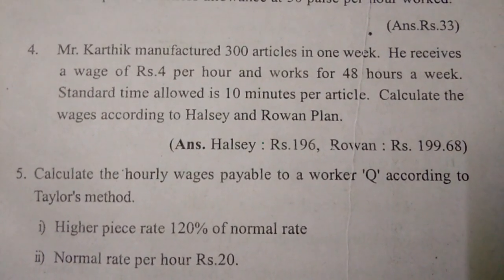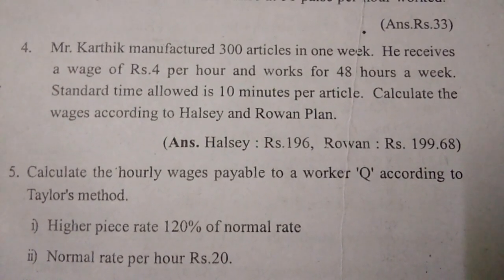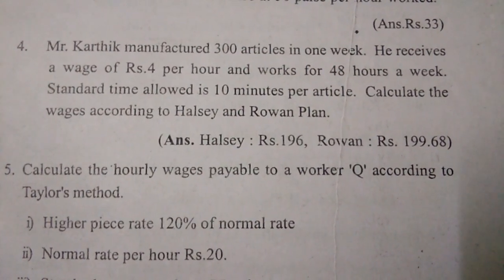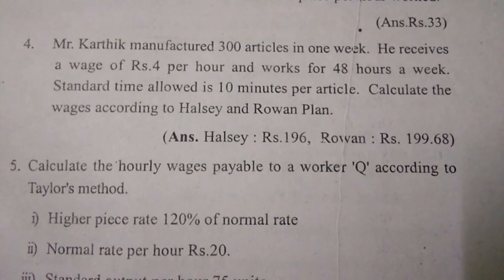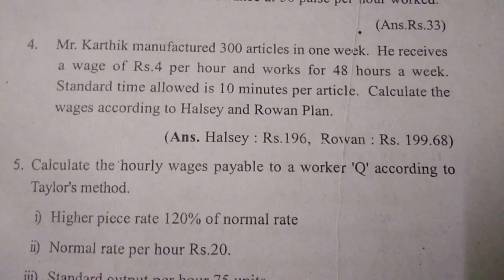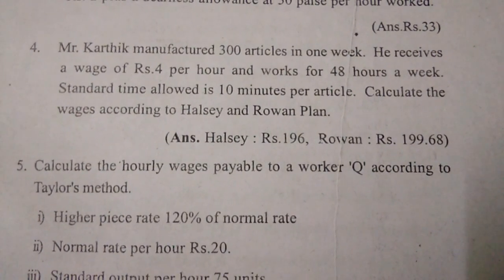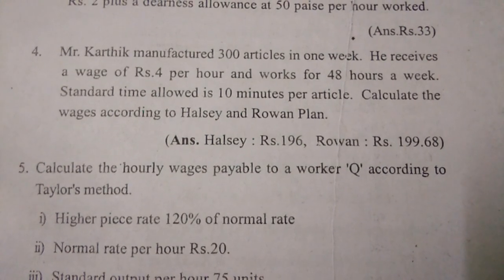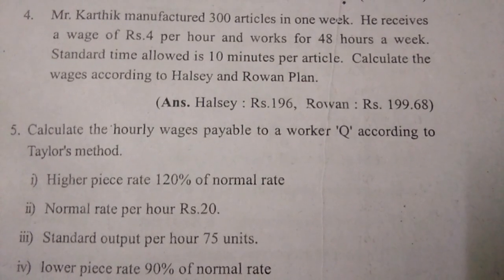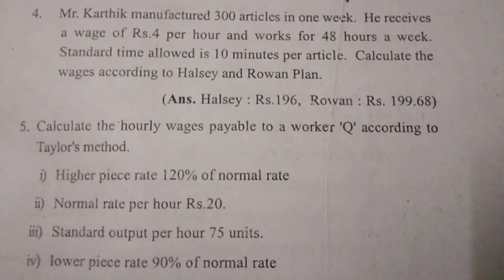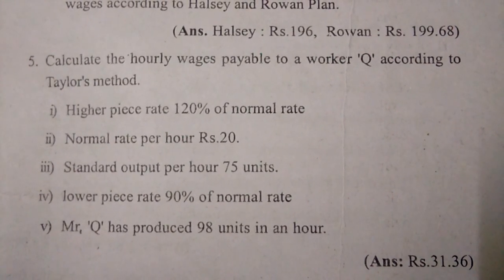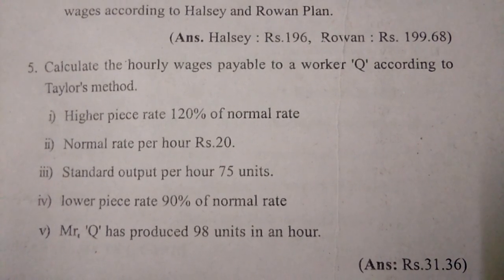Fourth one: Mr. Karthik manufactures 300 articles in one week. He receives a wage of 4 rupees per hour and works 48 hours a week. Standard time allowed is 10 minutes per article. Calculate the wages according to Halsey and Rowan plans — Halsey: 196 rupees, Rowan: 199.68 rupees.